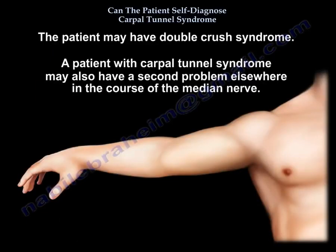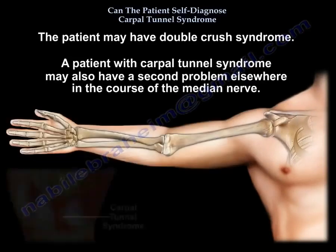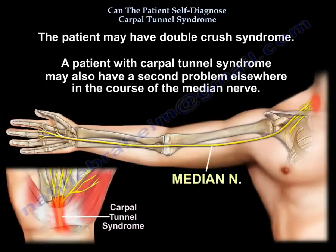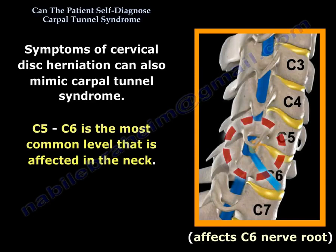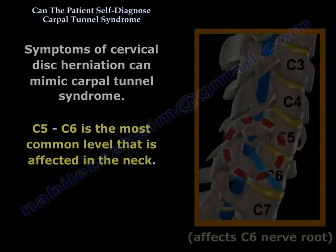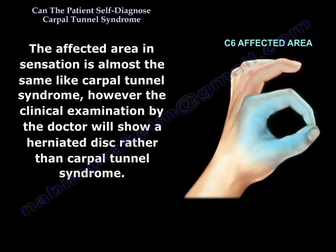The patient may have double crush syndrome — for example, a patient with carpal tunnel syndrome may also have a second problem elsewhere in the course of the median nerve. Symptoms of cervical disc herniation can also mimic carpal tunnel syndrome; C5–C6 is the most common level affected in the neck. The affected area in sensation is almost the same as carpal tunnel syndrome; however, clinical examination by the doctor will show a herniated disc rather than carpal tunnel syndrome.